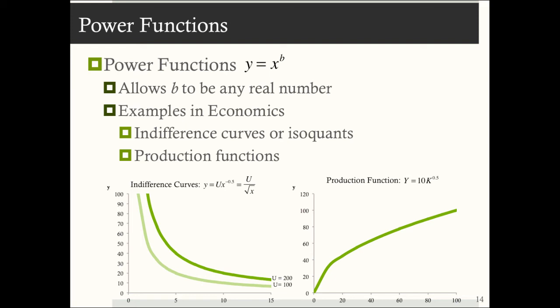And you'll also use power functions when talking about production functions. So for example, your Cobb-Douglas production functions in your intermediate macrocourses are power functions. So this graph here shows a production function of y is equal to 10 times k to the half. So power functions are a little bit more lenient. They're not as strict as quadratic or cubic functions where that b has to be greater than or equal to 2.